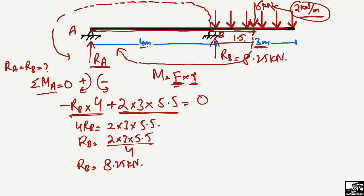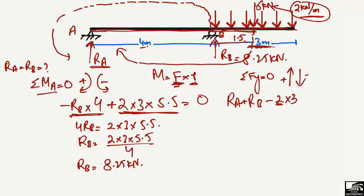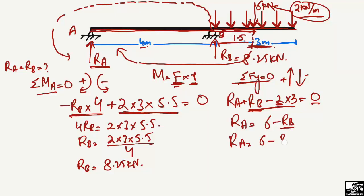To find R_A we use the equilibrium equation: summation of vertical forces equal to zero. Upward forces are positive and downward forces are negative. The upward forces are R_A and R_B, so R_A + R_B. The downward force is the UDL: 2 kN/m over 3 meters, giving 2 × 3 = 6 kN. Setting the sum of vertical forces to zero: R_A + R_B − 6 = 0. Since R_B is known, we get R_A = 6 − R_B = 6 − 8.25.